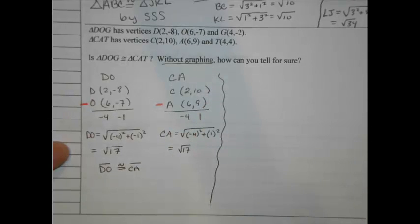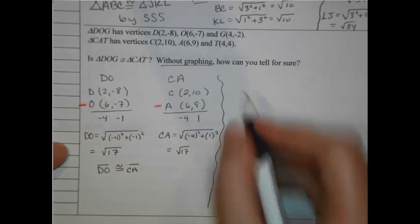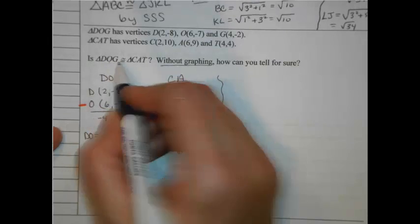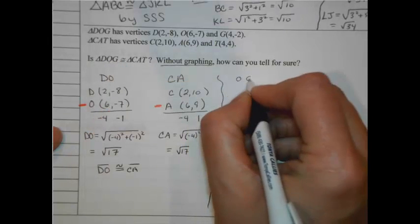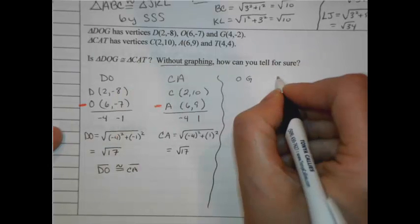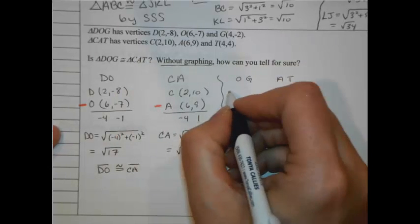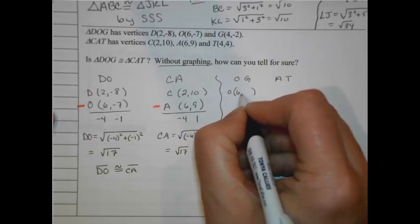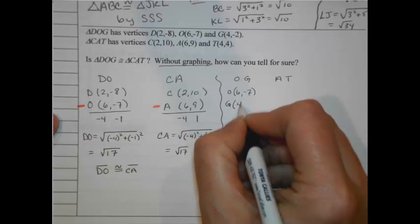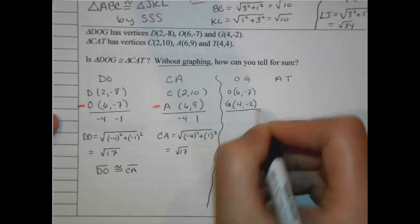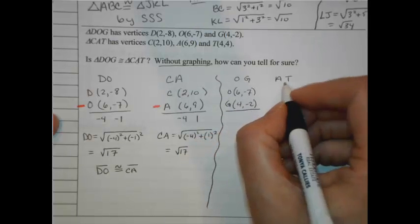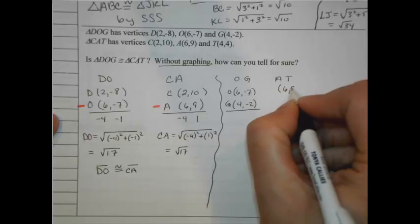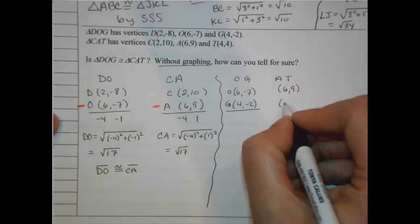What about the other ones? We do the same thing for the other sets. So let's go ahead and check out OG. If I do OG, and what would it match? It would be AT. And I do the same stacking thing. For OG, let's put O here at (6, -7). G is (4, -2). And I'm going to subtract those. Let me list my other ones here first. A is (6, 9), and for T, (4, 4).